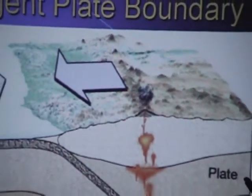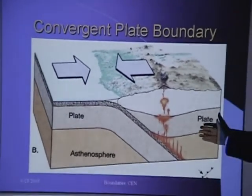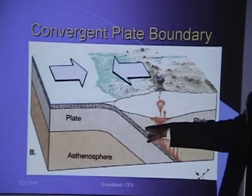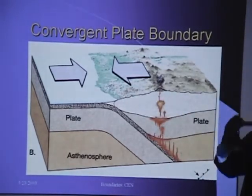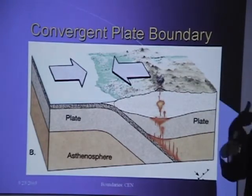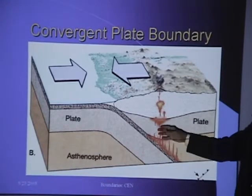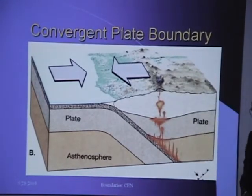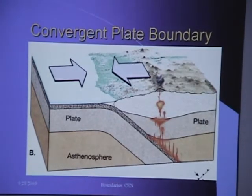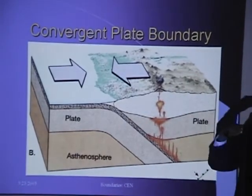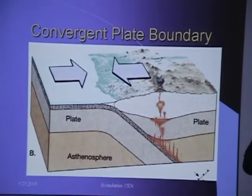The divergent plate boundary means things are being pulled apart — this is what's happening in the middle of the Atlantic, where volcanoes come up. As the plates pull further apart, more volcanoes appear, so the youngest volcano is right in the center, and as you go away from the center, the volcanoes get progressively older. That's the general way the entire Atlantic is built up.